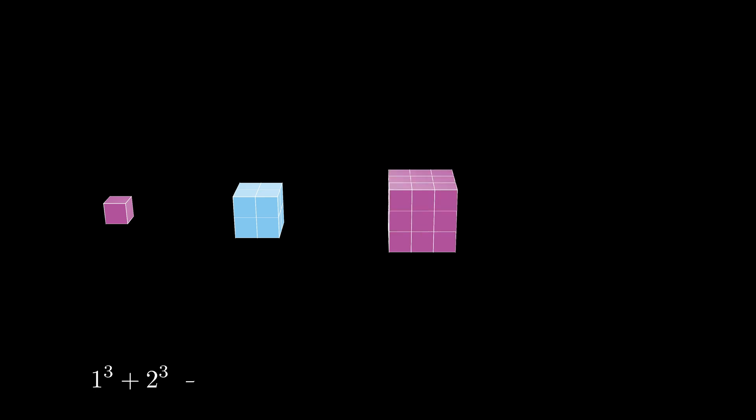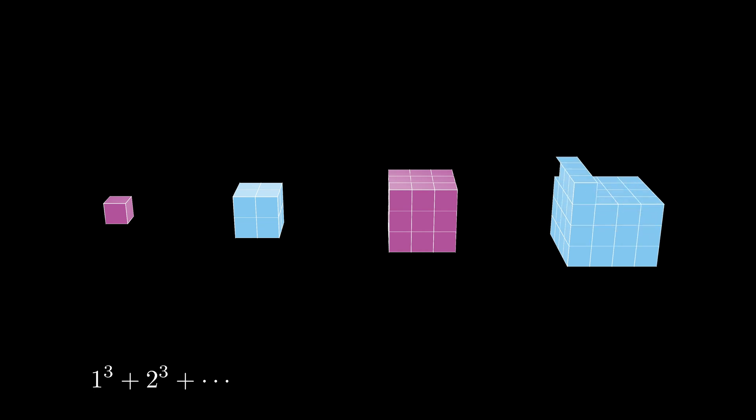So this stack represents 1 cubed, this one represents 2 cubed, this one represents 3 cubed, and so on, where we can end at n cubed. In this case we've pictured n equals 4. When we put these stacks together, we see we have a representation for the sum of the first n positive cubes.